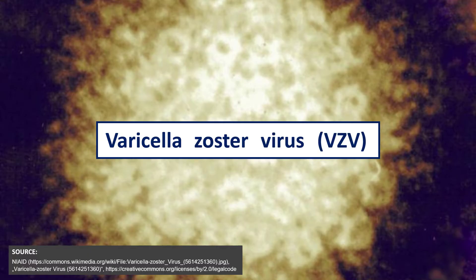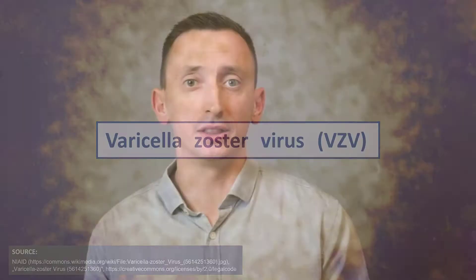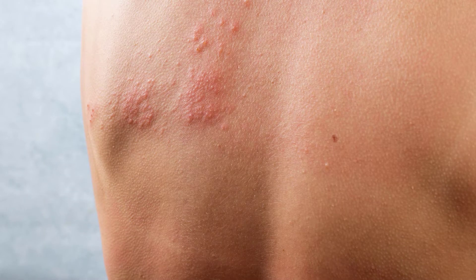Your typical patient will be a person in their 70s or 80s who will present with intense acute unilateral pain somewhere in the trunk — in the chest or in the abdomen. And after a few days, this typical herpetic rash will appear in the same place where the pain started.